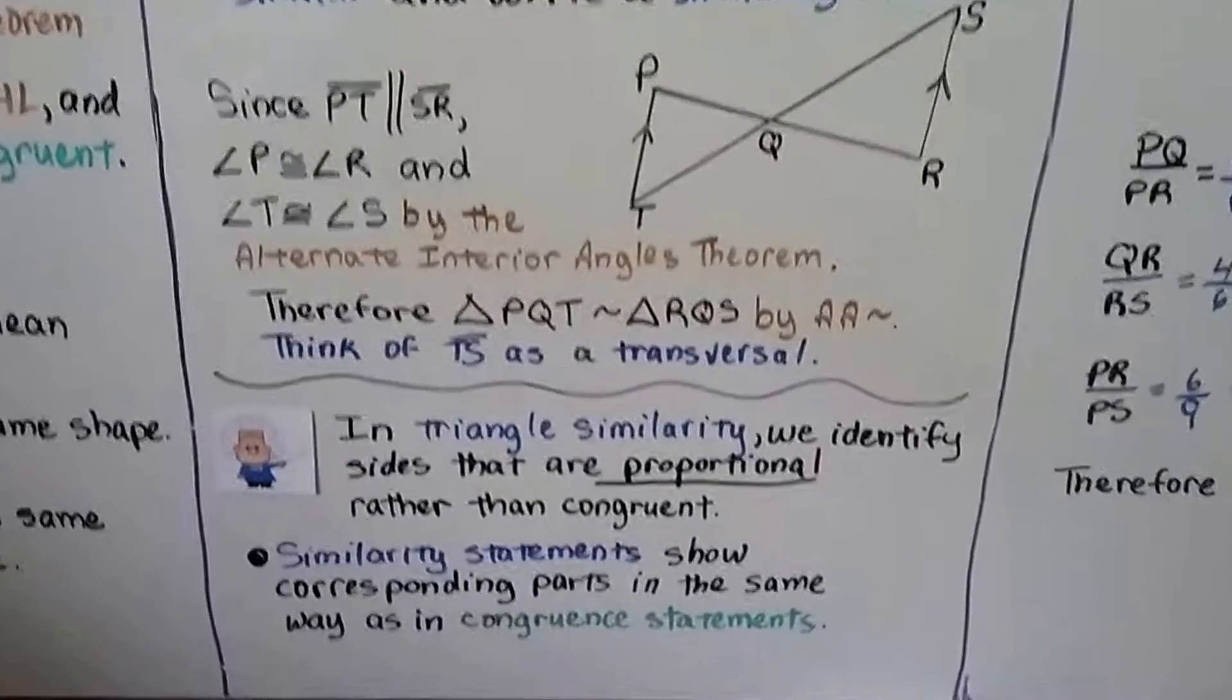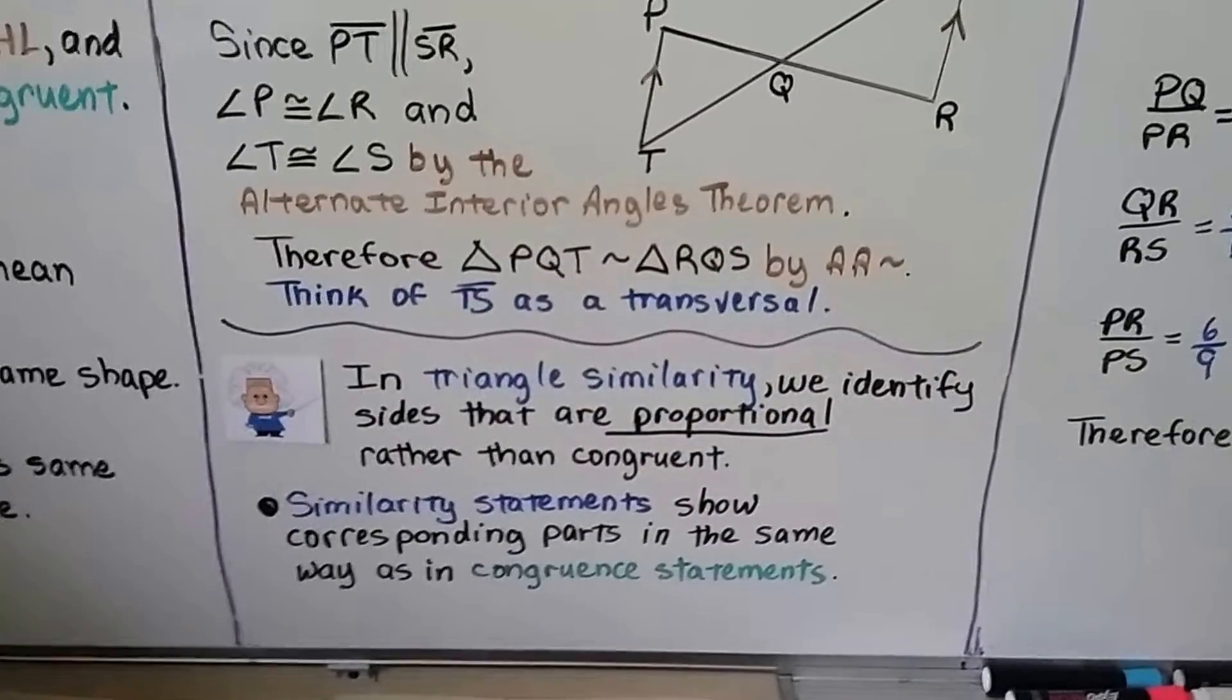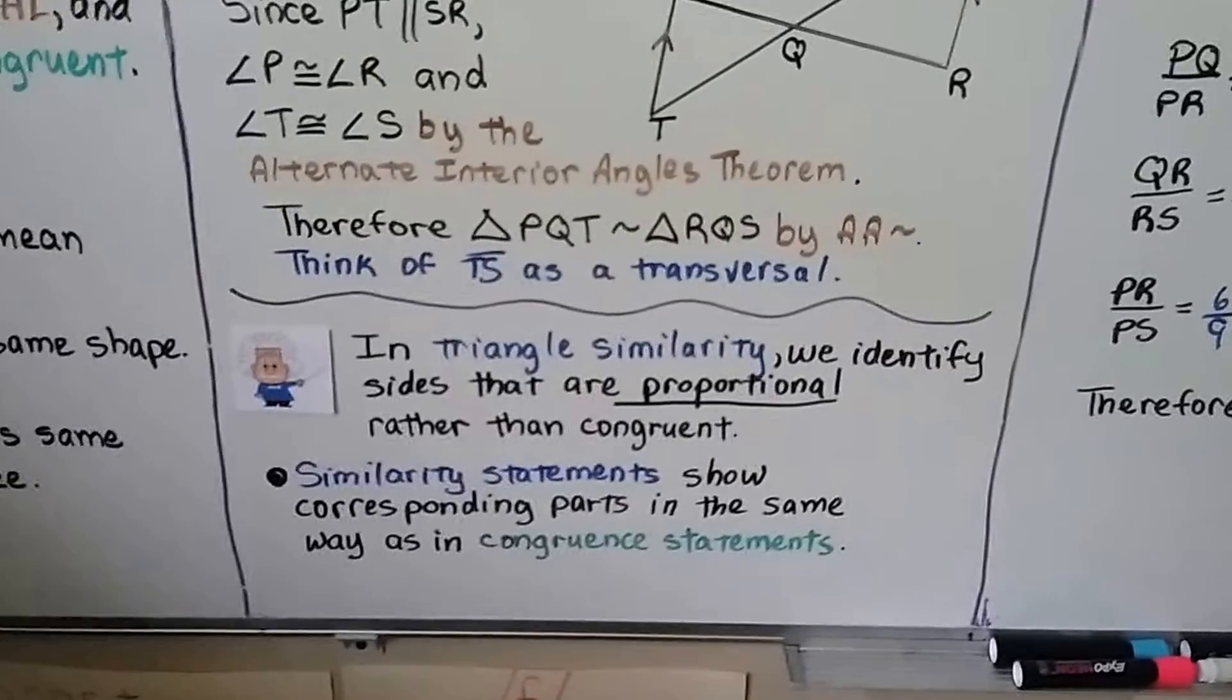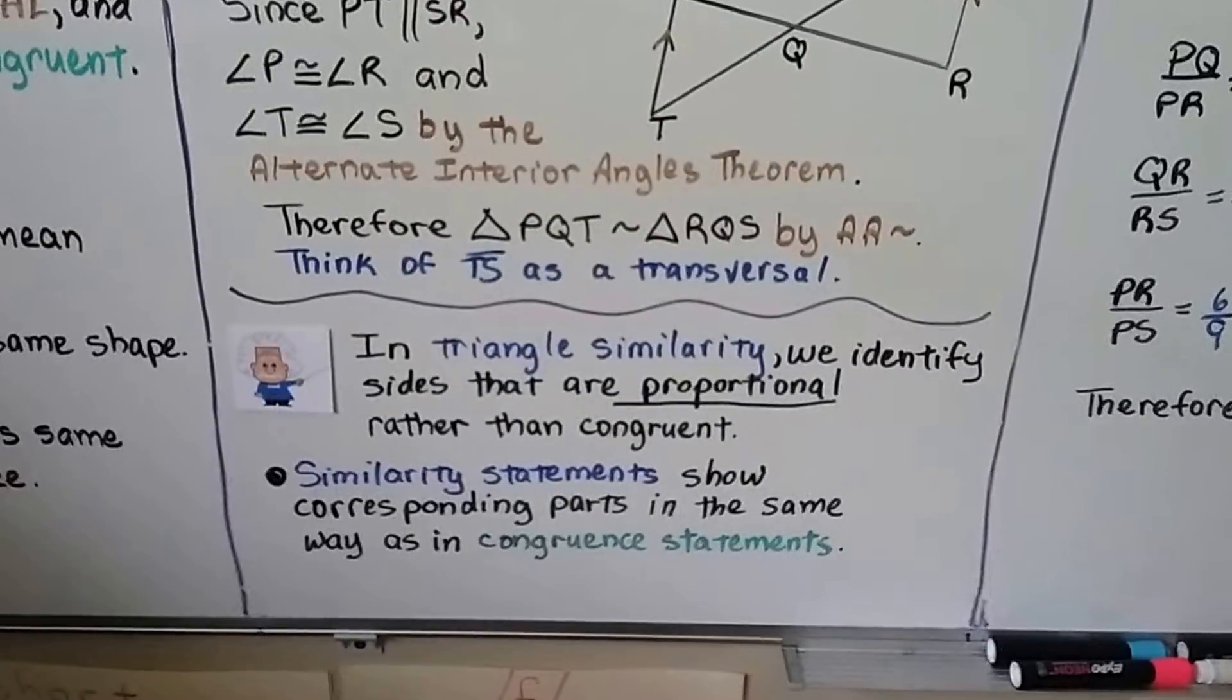In triangle similarity, we identify sides that are proportional rather than congruent. Similarity statements show corresponding parts in the same way as in congruent statements.